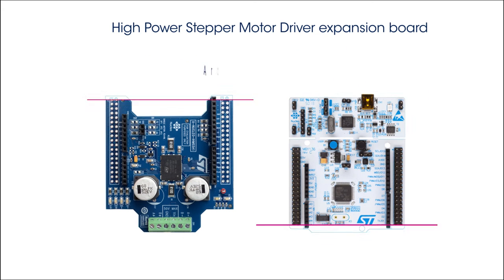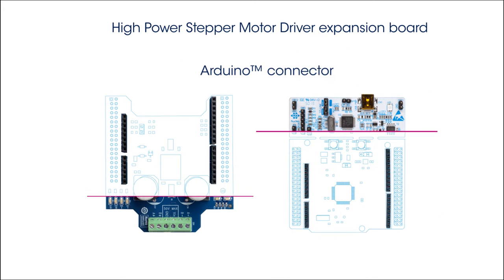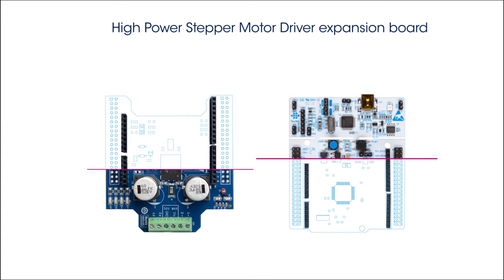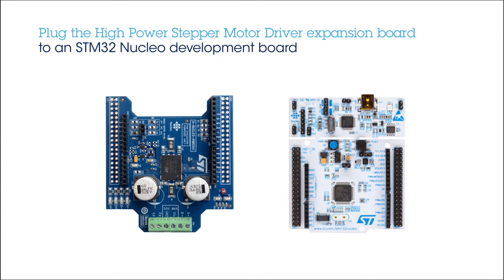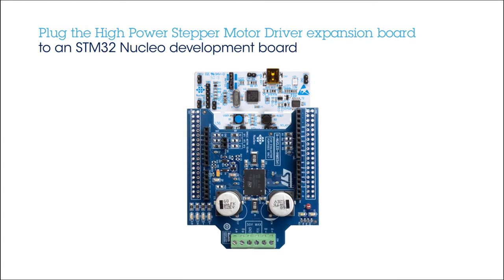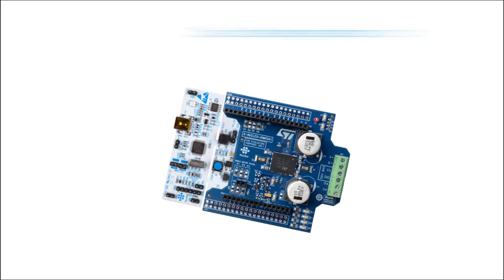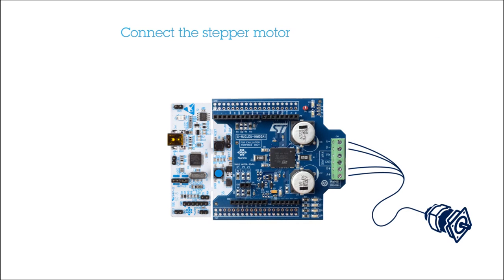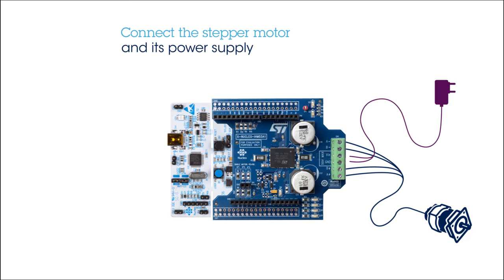The board is equipped with an Arduino Uno R3 connector, allowing it to be plugged into an STM32 Nucleo Development Board. First, connect a bipolar stepper motor to the expansion board, taking care to match each phase to the respective power bridge. Then, connect the voltage power supply.